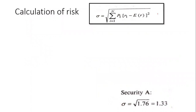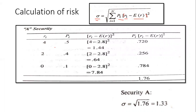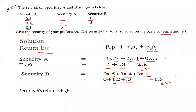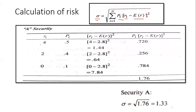Now let's calculate risk. The formula for standard deviation is: σ = √Σ[Pi × (Ri − E(R))²]. That is, for each return, we take the return minus the expected return, square the result, multiply by the probability, sum all those values, and then take the square root.